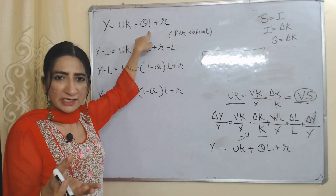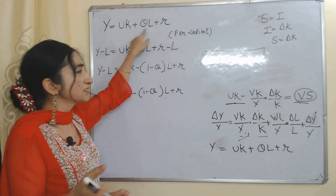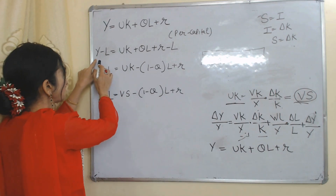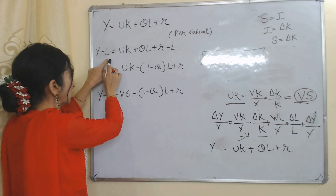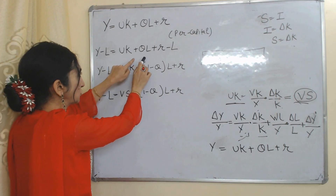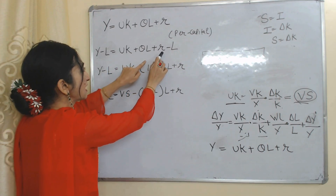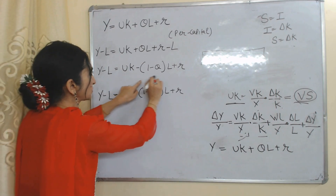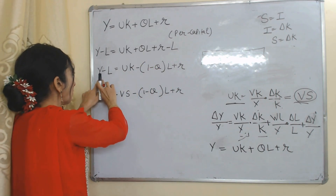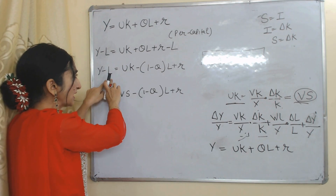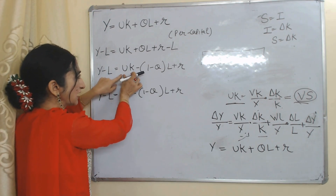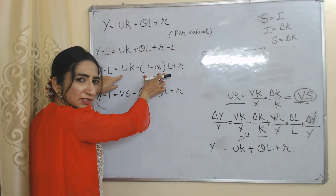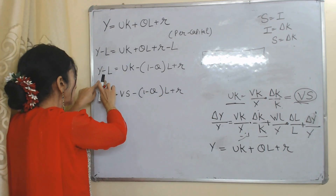To find real income per head, we subtract L from both sides of the equation. Our equation becomes: Y − L = UK + QL + R − L. Taking (Q − 1)L common, our equation becomes Y − L = UK + R − (1 − Q)L. Here Y − L is real income per head, UK is the growth rate in capital, R is technological progress, and the remaining term represents the growth rate in population.